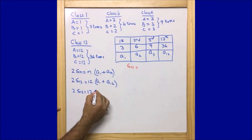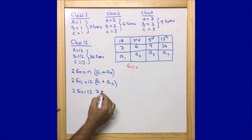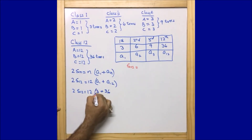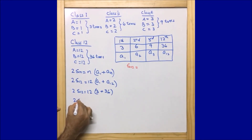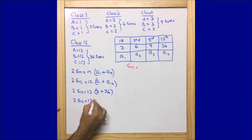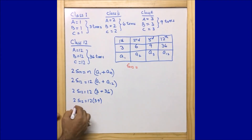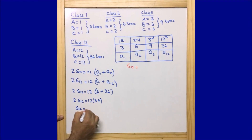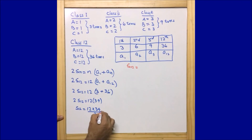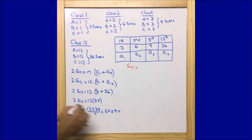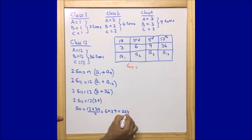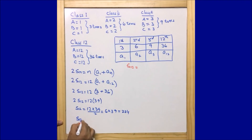Substituting the values — a1 = 3 and a12 = 36 — we get S12 = 12/2 × (3 + 36) = 6 × 39 = 234. So we are able to find out that S12 = 234.